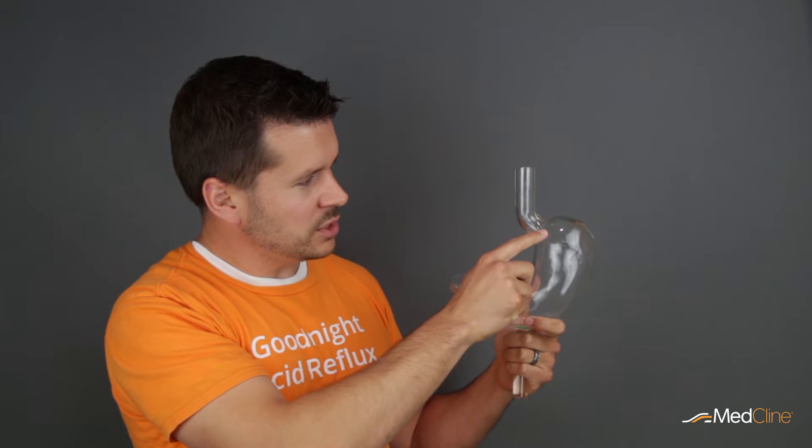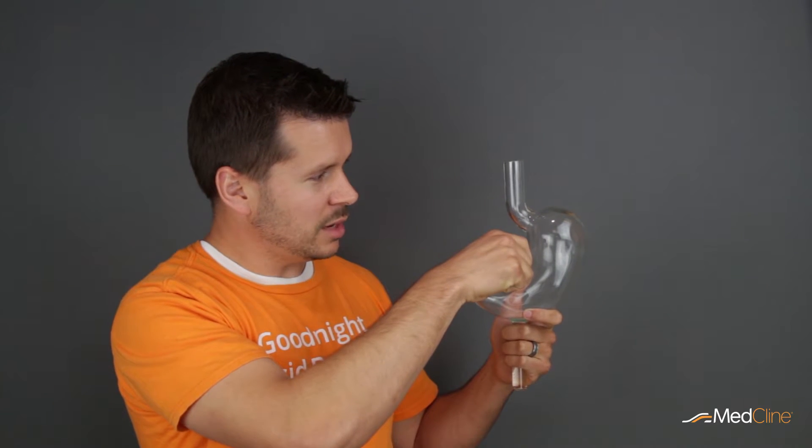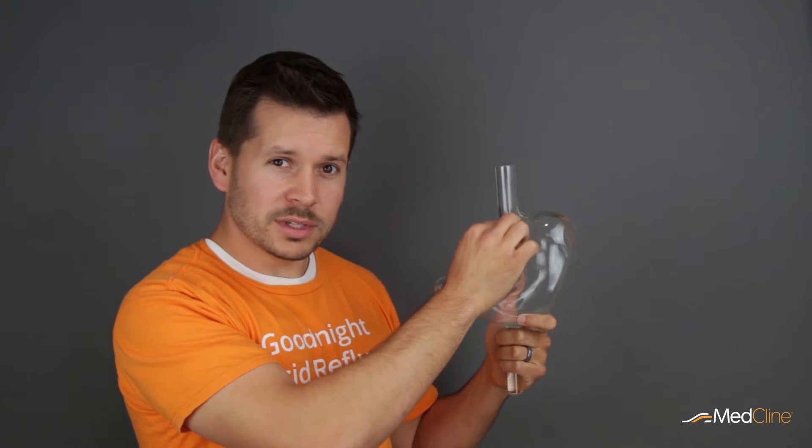Right before this tube connects with your stomach is something called the lower esophageal sphincter. This is a circular band of muscles that opens up to let food through into your stomach, and is supposed to close to keep the food from going back out into your esophagus.